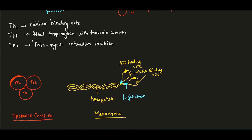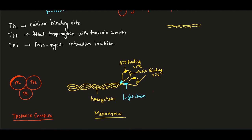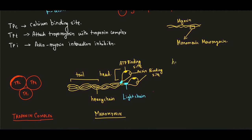Next, myosin is a long fiber. Its monomeric units assemble to form the whole myosin complex. In the myosin molecule, there is a bulge at one end forming the head region, and the rest is the tail region. The head region generally has ATPase activity — that is, it has the capacity to break down ATP.